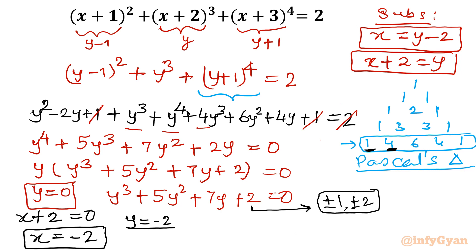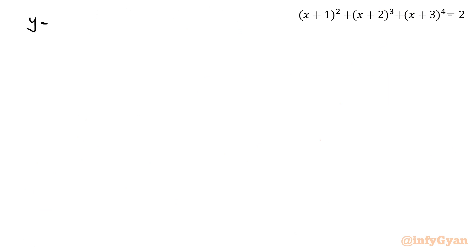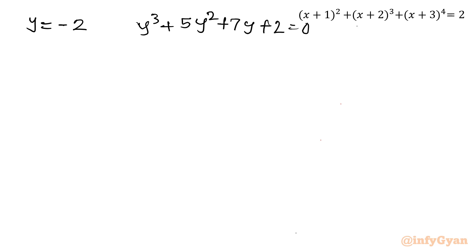Out of these four possible values, let me test y = −2. (−2)³ = −8; 5×(−2)² = 5×4 = 20; 7×(−2) = −14; plus 2. Checking: 20 + 2 = 22, and −8 − 14 = −22. So the total is 0 — yes! That means y = −2 is one root of the cubic. Now I will use synthetic division. Setting up: y = −2 with coefficients 1, 5, 7, 2.